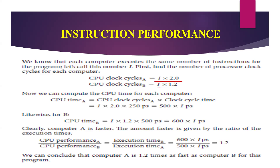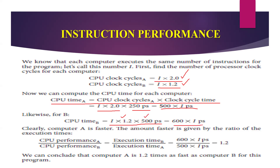Now we can compute the CPU time for each computer. CPU time A equals CPU clock cycles A multiplied by the clock cycle time. That is I × 2.0 × 250 picoseconds, which gives 500 × I picoseconds. For computer B, CPU time equals I × 1.2 × 500 picoseconds, which gives 600 × I picoseconds.